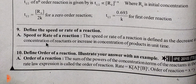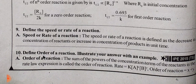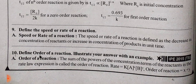We have to define the order of a reaction. Sum of the powers of the concentration terms of reactants in the rate law expression is called the order of a reaction. So, rate = K × [A]^x × [B]^y, and the order equals x plus y.